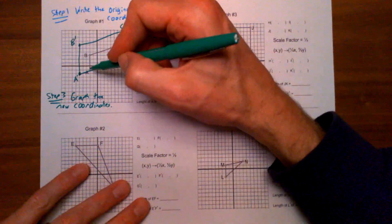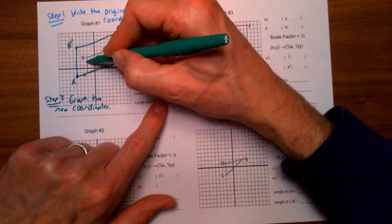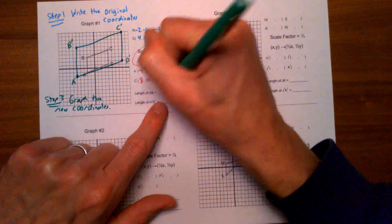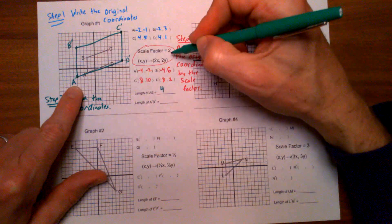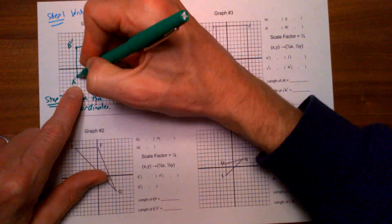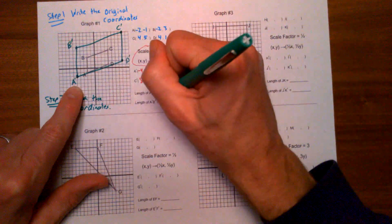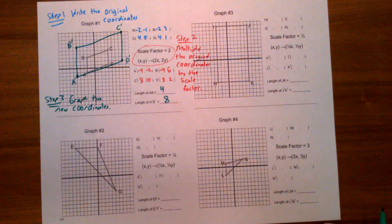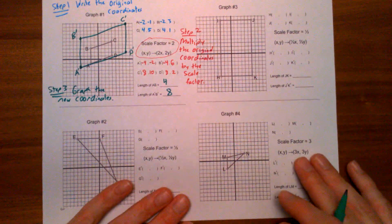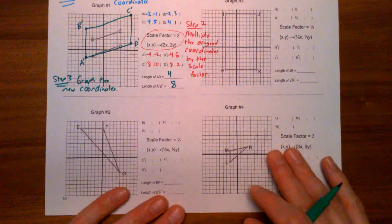Let's check the lengths. The original length of AB was four units, and the new length from A' to B' should be doubled — and it is eight units, just as we predicted. It doubled in length.